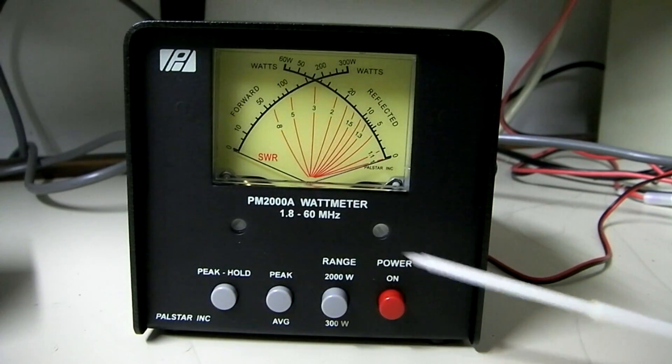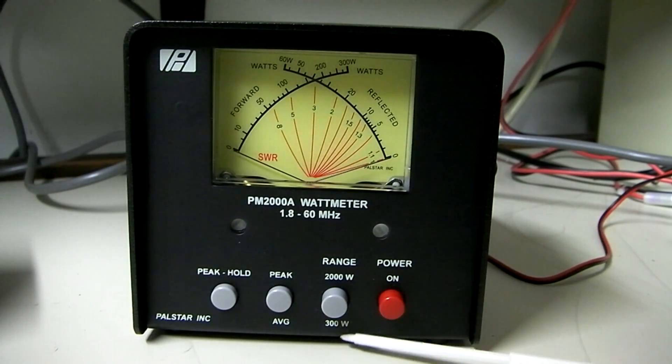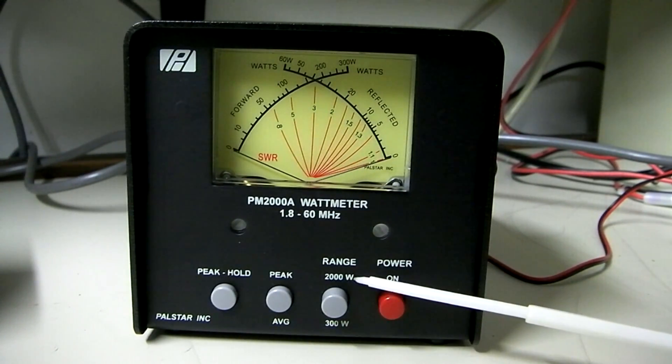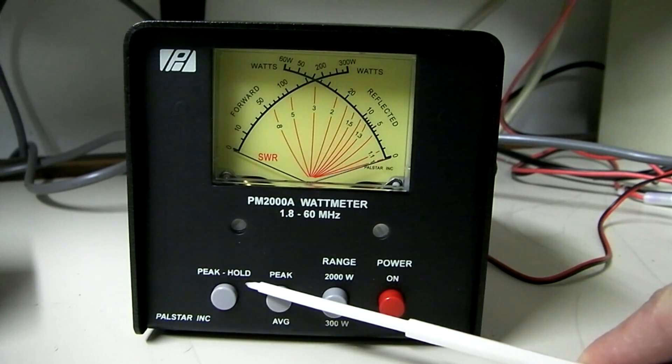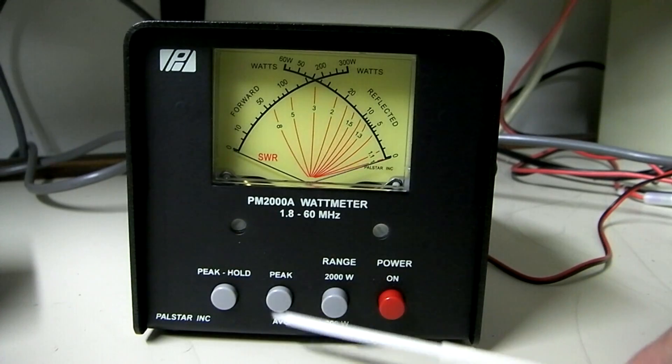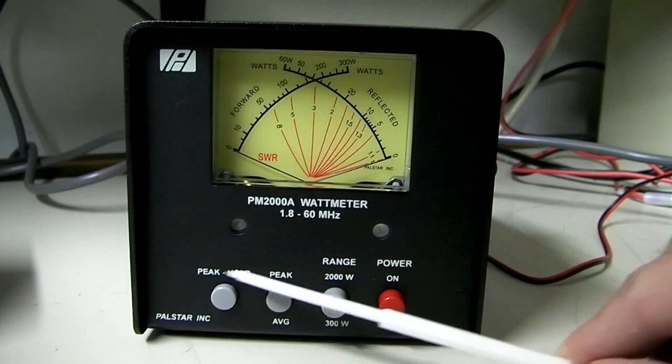So, the meter itself, on-off button here, your power range. If you're operating at 300 watts or below, you would leave it out on the button, 2,000 watts in. Peak average button here, and peak hold button here. This is your average power, peak power, and if you want to have the needle hold, that's what the peak hold does.